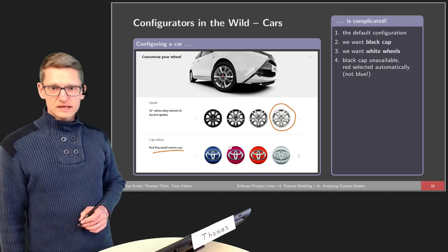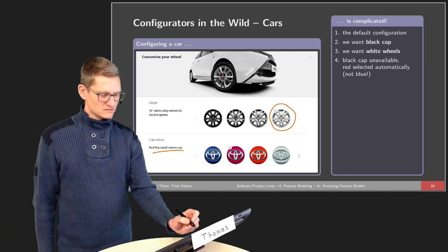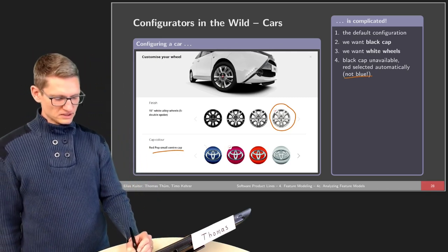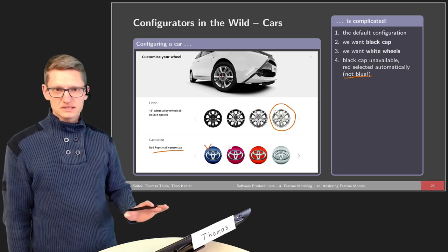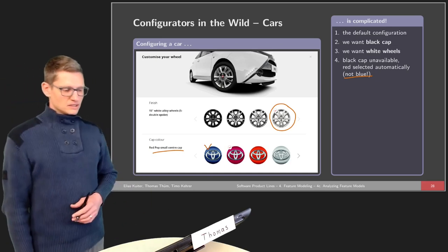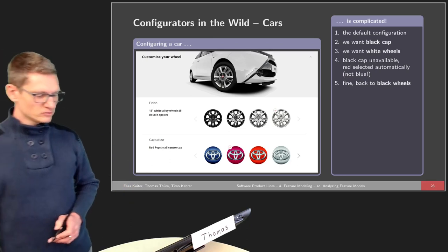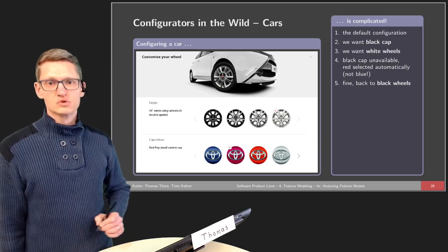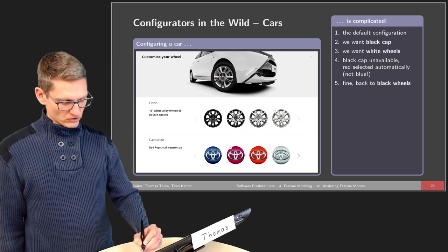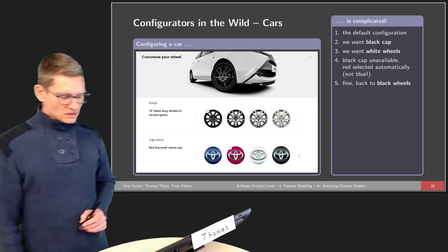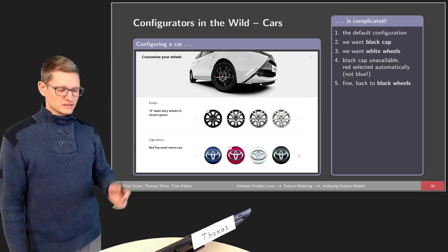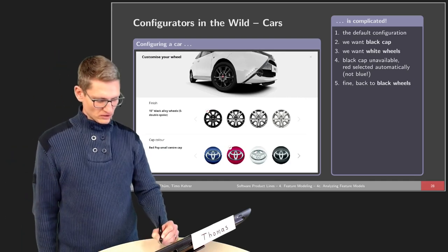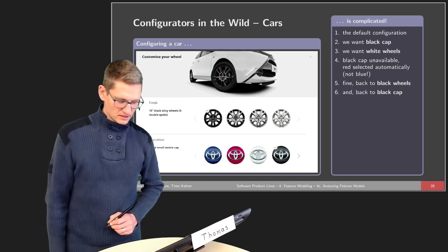I need to make another selection here. What is also interesting is that the automatic selection here is not blue — blue would have been the default selection, but that's not the case. So we want to go back to black wheels because this black cup is really important to me — it's the most important part of the car for myself. When we return to the black wheels, we again need to make our selection on the caps.